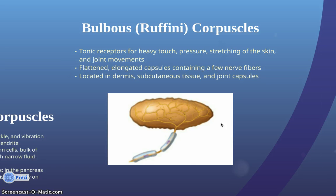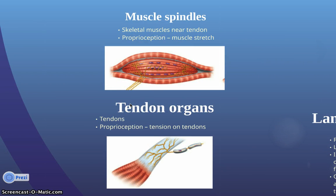The bulbous corpuscles are tonic receptors for heavy touch, pressure, stretching of the skin, and joint movements. They are flattened, elongated capsules containing a few nerve fibers located in the dermis, subcutaneous tissue, and joint capsules. The muscle spindles are located in skeletal muscles near tendons and are involved in proprioception and stretch. The tendon organs have a similar function.